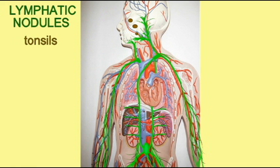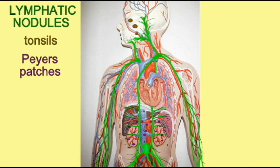There are lymphatic nodules. These are collections of lymphatic cells which lack a capsule, so they are not clearly distinct from the surrounding tissues and not clearly set apart because of the lack of this capsule. Tonsils refers to the five masses of lymphatic tissue in the vicinity of the oral and nasal cavities.